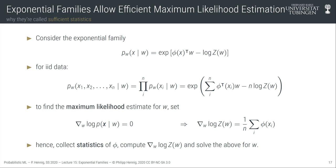Another great property of exponential family distributions is already hinted at in that expression: the gradient of the log normalization constant is related to what looks like an expected value of the sufficient statistics. Let's make that formally precise: the gradient of log z(w) is equal to the expected value of the sufficient statistics. If you integrate the exponential family distribution over x — which gives 1 by definition — and take the gradient of that, setting it to zero, you can move the gradient inside and apply the chain rule: the inner derivative of the exponential is phi(x) minus the gradient of log z(w), and rearranging shows that the expected value of phi(x) equals the gradient of log z(w).